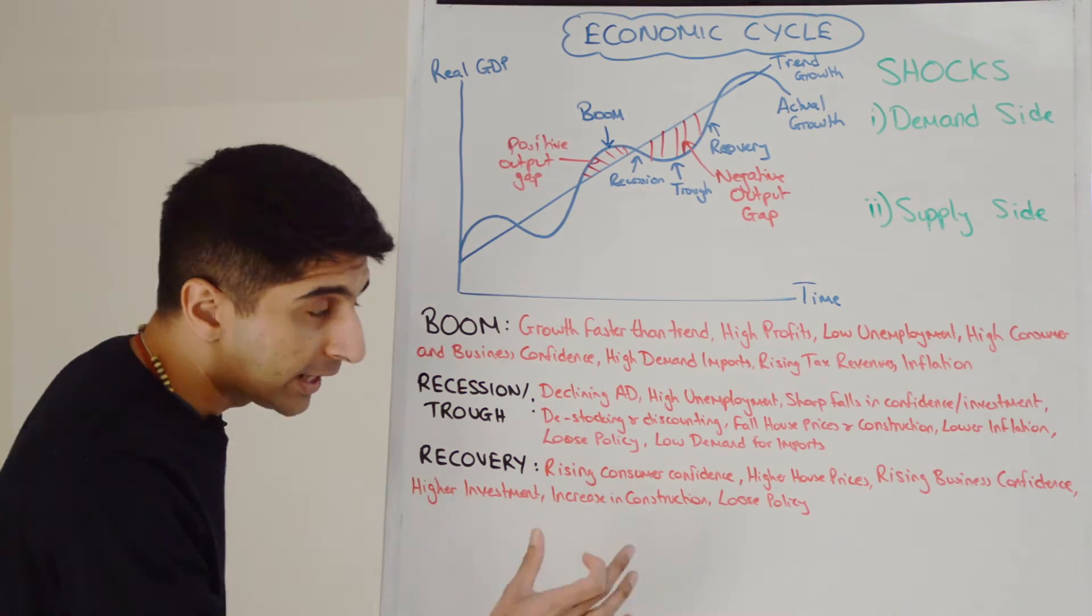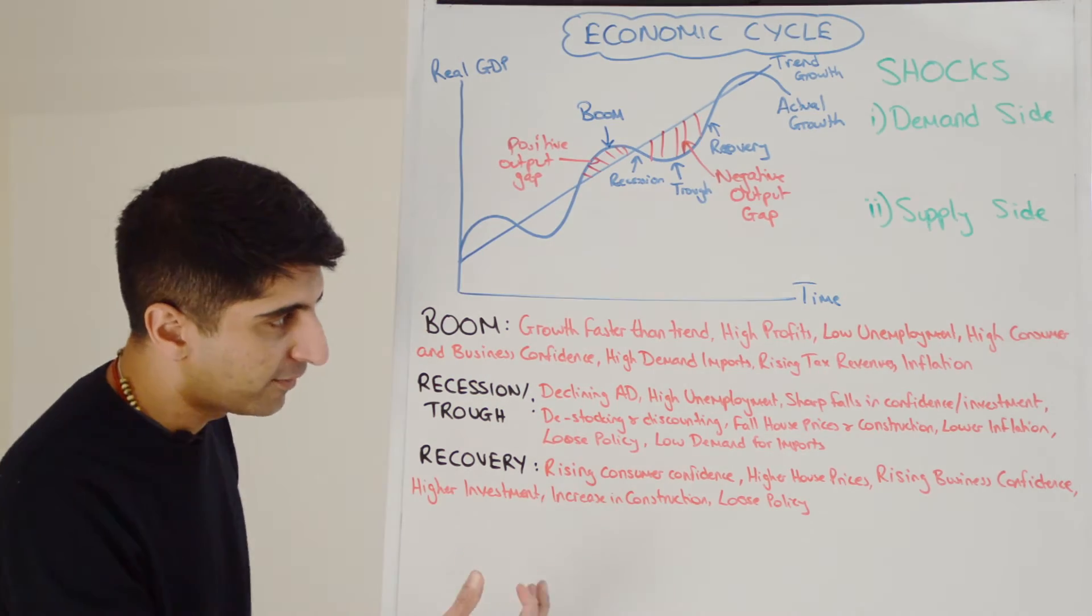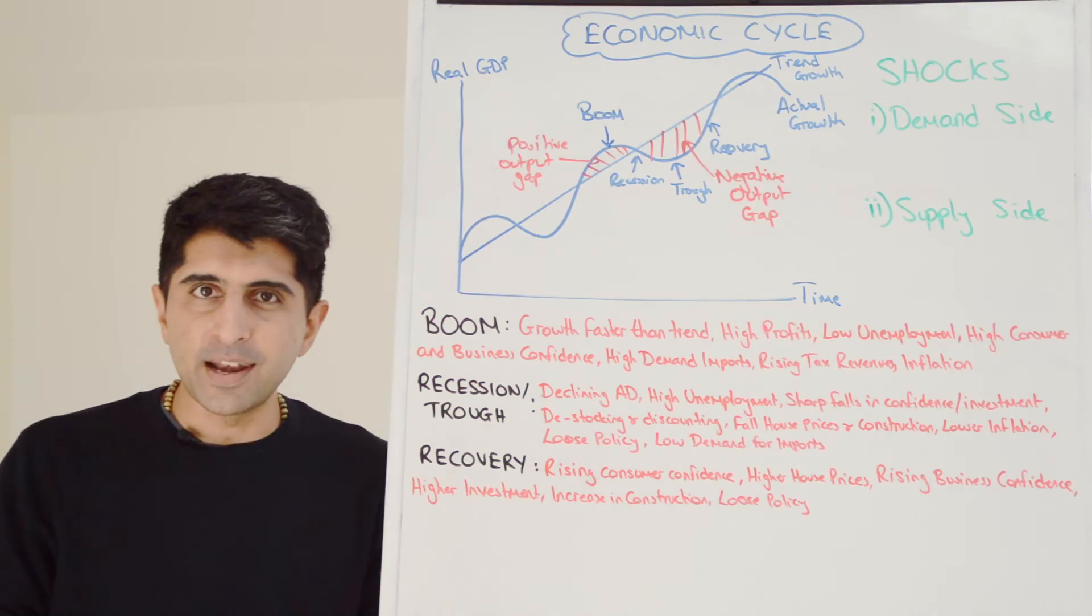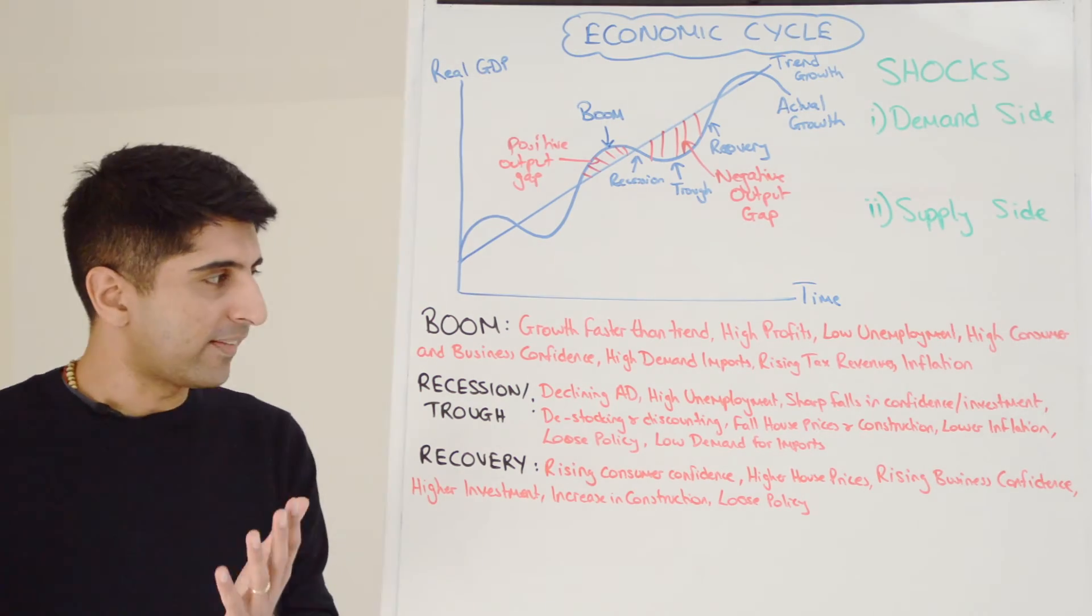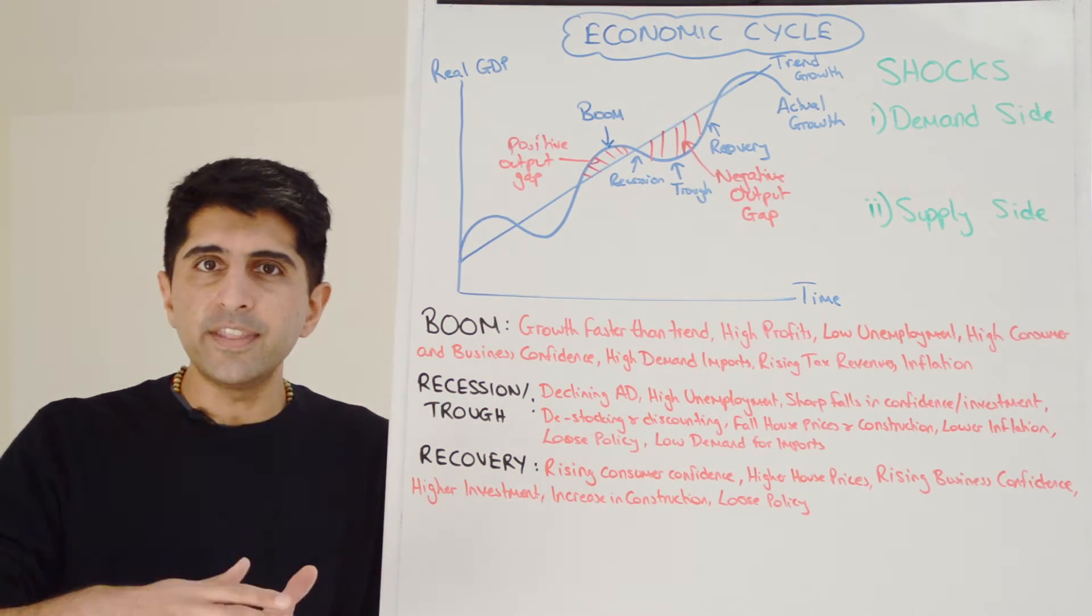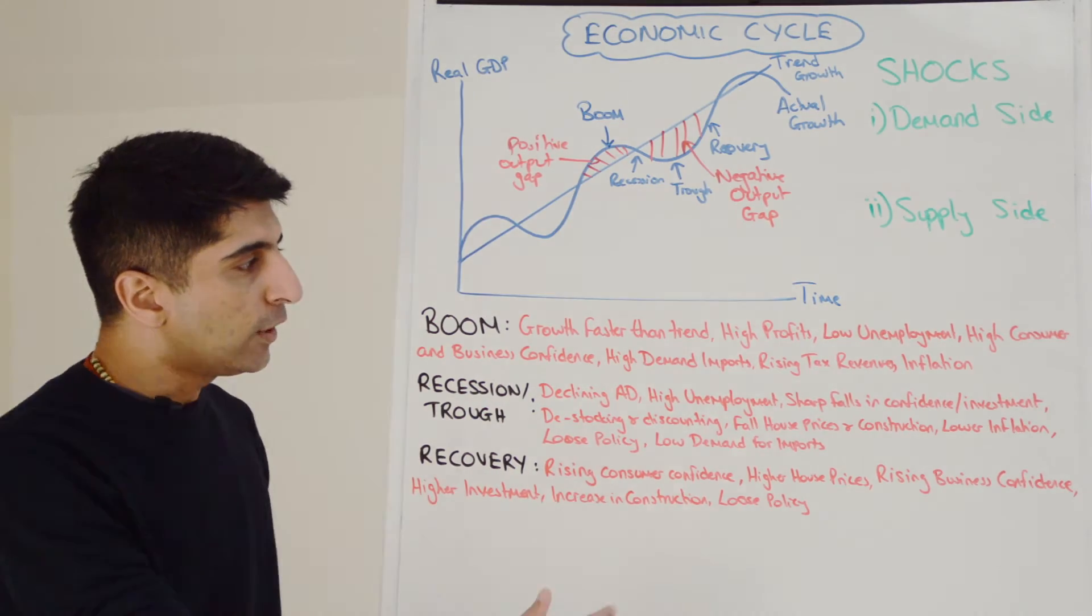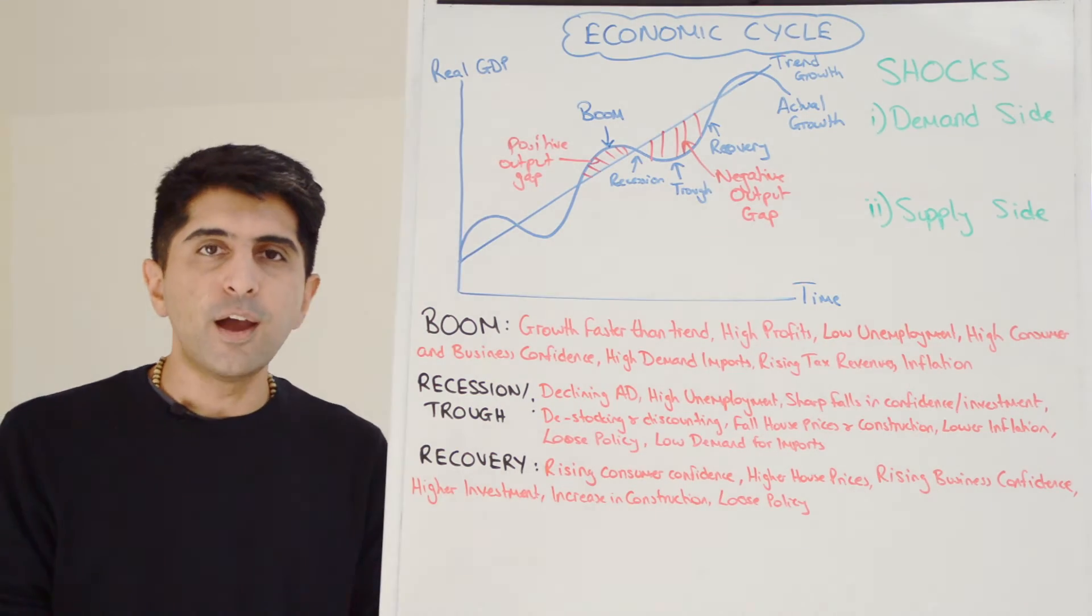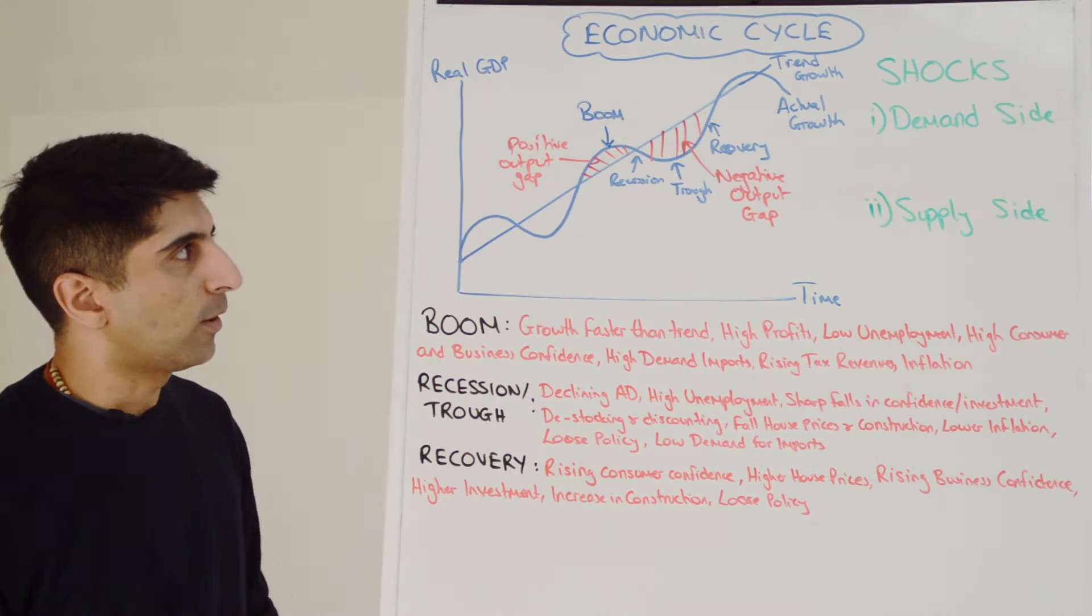That's a good sign of recovery. Also an increase in construction that comes again from investment, but also consumers spending on renovating their houses, expanding their houses, etc. But also loose policy still to try and prevent the economy going back into recession. So these are some of the key characteristics of the four different phases of the economic cycle.